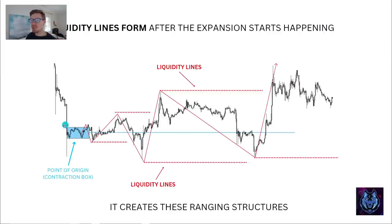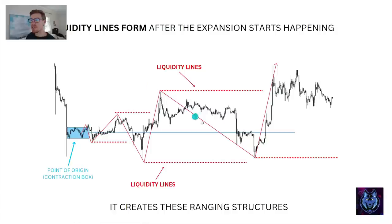You've got this contraction box that's formed. Price expands above and below — we draw the line, it is now confirmed. At each expansion point above the box we draw the liquidity line below it. So it expands up — we draw this liquidity line. Expands down — we draw this liquidity line. Expands up — we draw this liquidity line. Expands down — we draw this liquidity line. And as you can see, these become targets.